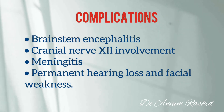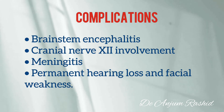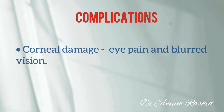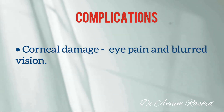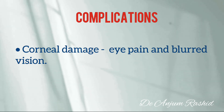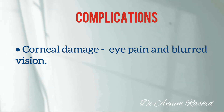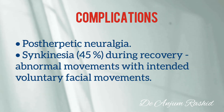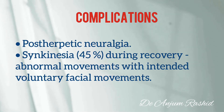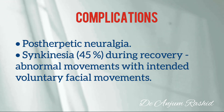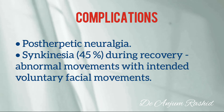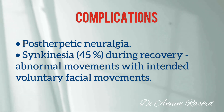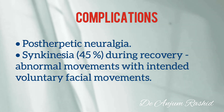Complications of Ramsay Hunt Syndrome may include brainstem encephalitis, involvement of the 12th cranial nerve, meningitis, permanent hearing loss, and facial weakness. Eye damage can also occur — the facial weakness makes it difficult to close the eyelid, causing the cornea to become damaged, leading to eye pain and blurred vision. Another complication is post-herpetic neuralgia, a painful condition where varicella zoster virus damages nerve fibers, causing confused and exaggerated pain signals that may persist long after other symptoms have faded.